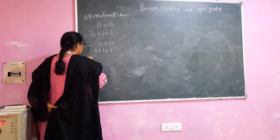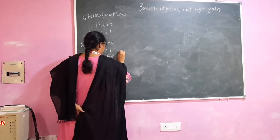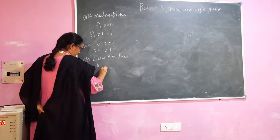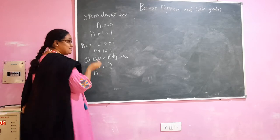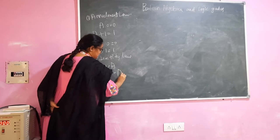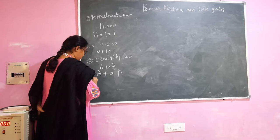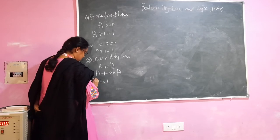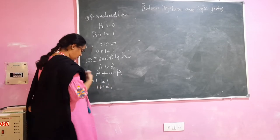Next, the second law is the identity law. This law states that when a variable is AND'd with 1, we get the same variable, and when a variable is OR'd with 0, we get the same variable. For example, if A is 1, then 1 AND 1, we get 1. Similarly, if A is equal to 1, then we get 1 plus 0 is 1. So this is the identity law.